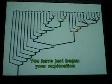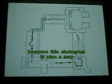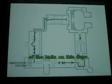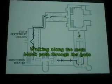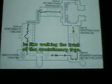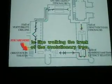You have just begun your exploration of the history of vertebrates. This cladogram is also a map of the halls on this floor. Walking along the main black path through the halls is like walking the trunk of the evolutionary tree.